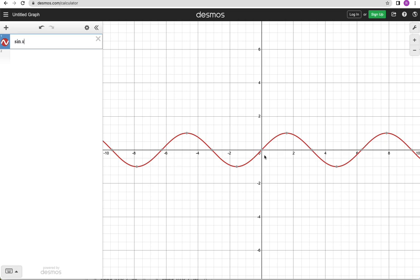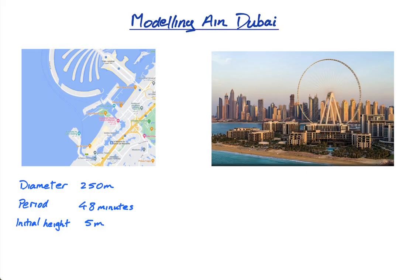This obviously is not the right model at all. The x-axis is going to be time, the y-axis is going to be height. The maximum height is going to be 250 plus the five meters. The maximum height is 250 and the minimum height is zero - that diameter is 250.